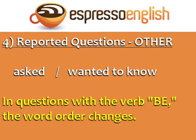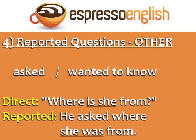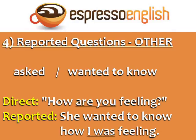In reported questions with the verb be, the word order changes. For example — Direct: 'Where is she from?' Reported: 'He asked where she was from.' You can see the word order changes: 'is she' becomes 'she was' in the reported question. Here's another example — Direct: 'How are you feeling?' Reported: 'She wanted to know how I was feeling.' The word order changes from the direct to the reported question.